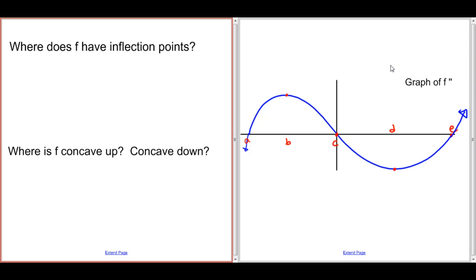We also can't say anything about the max or min of the function, because again we have to go back up the ladder. But what we can talk about are the second derivative analyses. So let's take a look at where f has inflection points and where f is concave up and concave down, based upon the graph of f double prime.